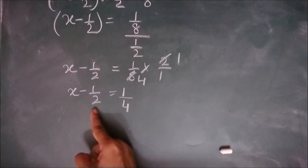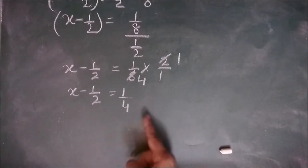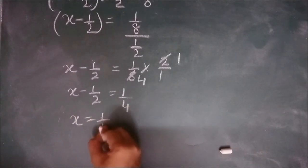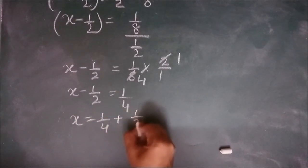Next step, 1 by 2 is in subtraction here. When it goes to the right hand side, it gets added. So x equal to 1 by 4 plus 1 by 2.